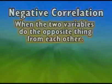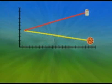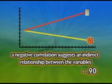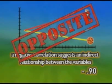So what's a negative correlation? A negative correlation is when the two variables do the opposite thing from each other. If pizza sales dropped significantly during every exam week, there would be a negative correlation between exams and pizza consumption. A negative correlation suggests an indirect relationship between the variables. One variable does the opposite of what the other is doing.